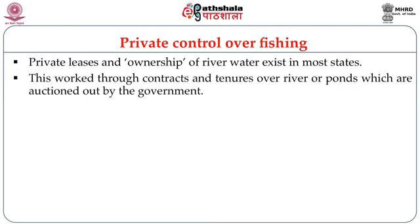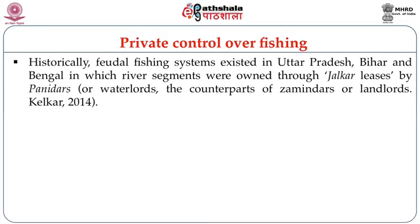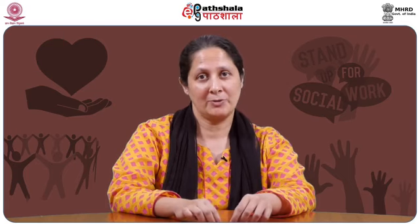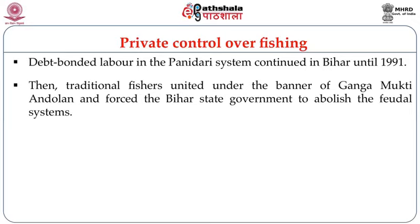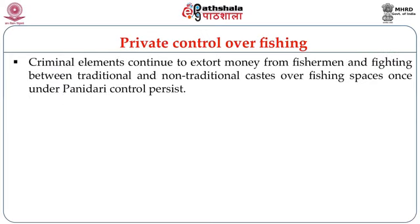Private ownership of river water existed in most states, working through contracts and tenures of fishing in river sections that were auctioned. Like zamindars or landlords, there used to exist paanidars or water lords in the states of UP and Bihar, who employed traditional fishers as debt-bonded and wage laborers. Jalkar leases were among the most exploitative practices in India, leading to frequent and violent conflicts between rich and poor fishermen and water lords. Ganga Mukti Andolan was carried out to abolish this feudal system of water rights, but conflicts continue, and criminal elements have now entered due to high economic gains.